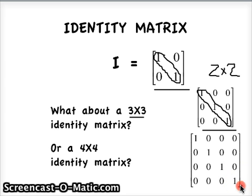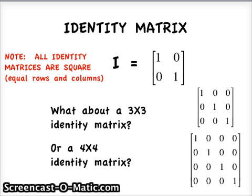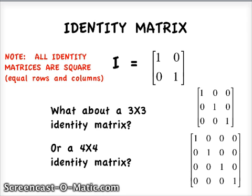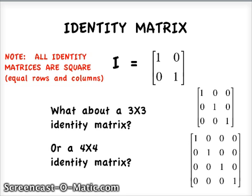Again, we have our diagonal of ones surrounded by zeros. That is what makes an identity matrix. Take note that all identity matrices are square, which means they have the same number of rows and columns. The two by two has two rows and two columns, the three by three has three rows and three columns, and the four by four has four rows and four columns.